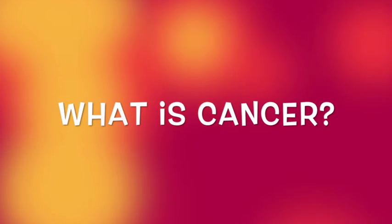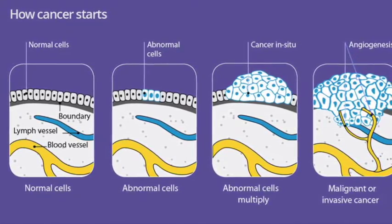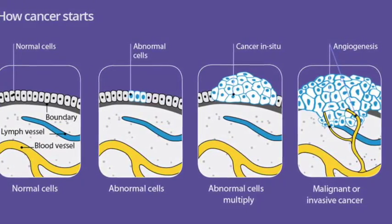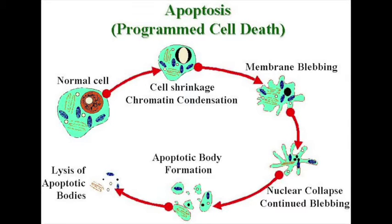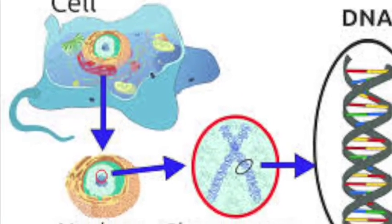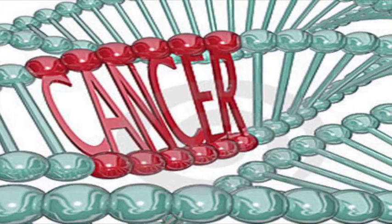What is cancer? Cancer happens when some cells in your body get sick and go a little crazy. These crazy cancer cells can cause problems because they do not act properly. Normal cells grow, reproduce new cells, carry out their jobs, and eventually die like they are supposed to. Cancer cells don't do these things properly. Cells contain instructions called DNA in their nucleus, and when these instructions are mutated or changed, they can become cancer cells.